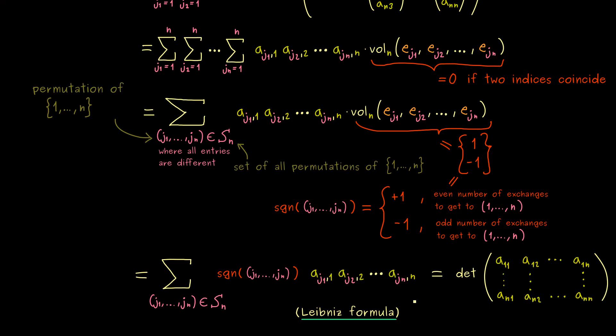And then what happens is that we simply sum up all the possibilities that we have for such a product. And we also add a plus or minus sign depending if our permutation is even or odd. So this is what you can remember. This is what the Leibniz formula tells us.